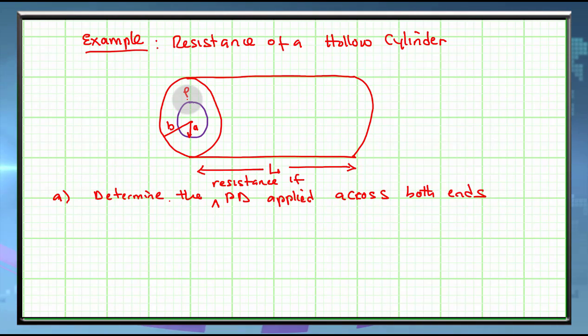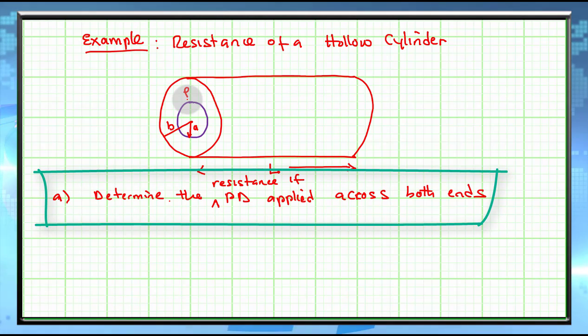If the potential difference is applied across both ends. So let's look at the resistance of the material provided that the potential difference is applied across both ends, that is here and here.